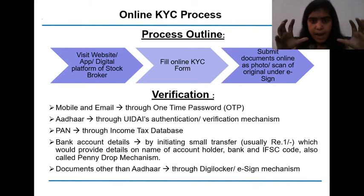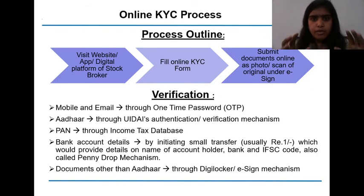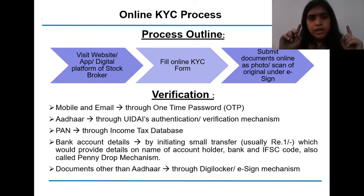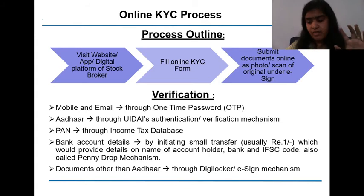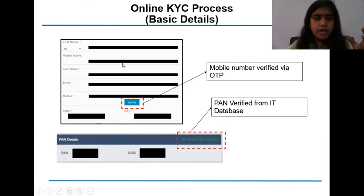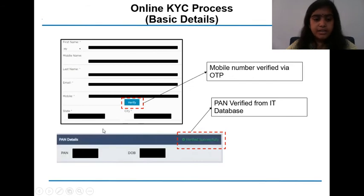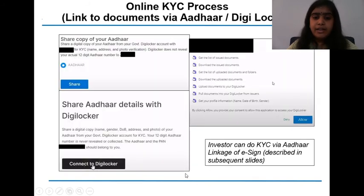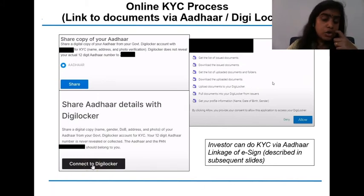DigiLocker is an application — there are various fake applications, so we need to be very careful when going for DigiLocker. We need to upload our documents; DigiLocker has its own verification mechanism. If our documents are uploaded on DigiLocker, we can use the same documents for various purposes, including online KYC. The form will look like this: first name, middle name, last name, email address, mobile number — mobile and email get verified as discussed — then state and city. For PAN, we write our PAN number and verify it with the IT database. For Aadhaar, we do it through DigiLocker. This is our outline of the online KYC process.